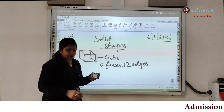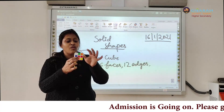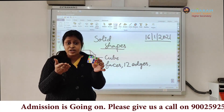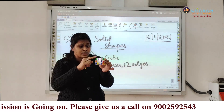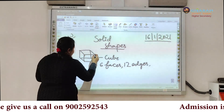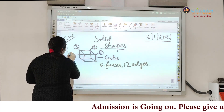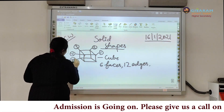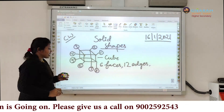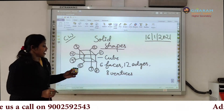Coming to the next part — what is this called? Corner. We will not call it a corner; we will call this a vertex. One corner is called a vertex, and all these corners are called vertices. So how many vertices are we having? Let me point out: one, two, three, four, five, six, seven, and eight. So we are having eight vertices.